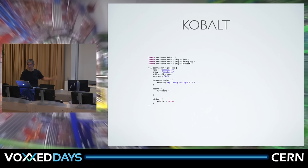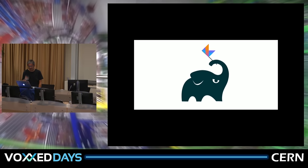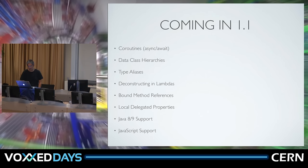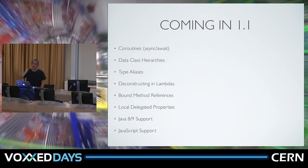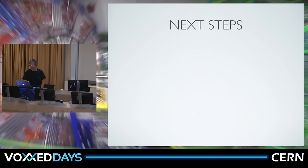In Kotlin 1.1, which is already in beta, we have coroutines, data class hierarchies, type aliases, deconstructing lambdas, and Java 8/9 support. We'll always remain Java 6 compatible for the foreseeable future, but if you say you're only targeting Java 8, we'll use Java 8 constructs in the bytecode.